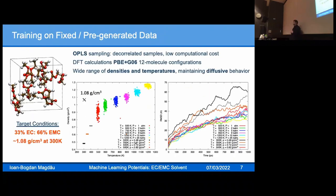Equipped with all these techniques, we go on to try to fit the potential for our target solvent composition. We're looking at this 33:66 composition for a density around one gram per centimeter cubed at around 300 Kelvin. The common wisdom says we should try to get as diverse a training set as we can. We used the cheap method OPLS to sample long molecular dynamics trajectories to ensure all configurations are decorrelated from each other.